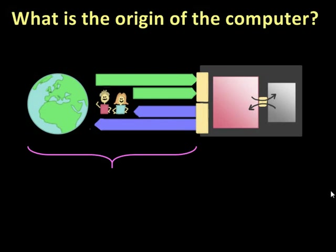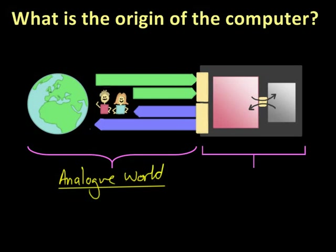On the left hand side we've got the world in which we live in, the world that we inhabit, which is termed the analog world. The analog world is the world of continually varying values. Computers inhabit a different world than that, they inhabit the digital world. The digital world is the world of discrete values.